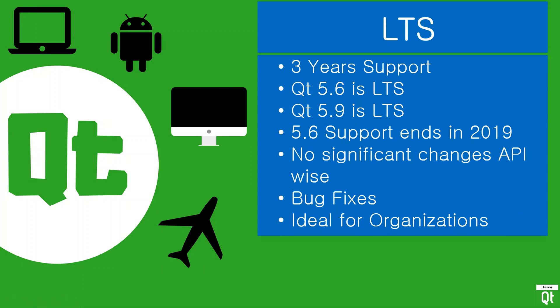Qt 5.12 is an LTS version, so it is going to be supported for three years. It was released in December 2018, and you can expect support at least through the end of 2021. It follows two other LTS versions — 5.6 and 5.9 — and 5.6 is going to end its support in the first months of 2019, so if you are on 5.6, it is a good time to move to the latest version. As usual with Qt 5 releases, there are no significant API changes, so applications written in 5.6 or 5.9 will probably build with only minor changes. This version also introduces a bunch of bug fixes, and it is ideal for organizations to run Qt applications on LTS versions for a more stable API.